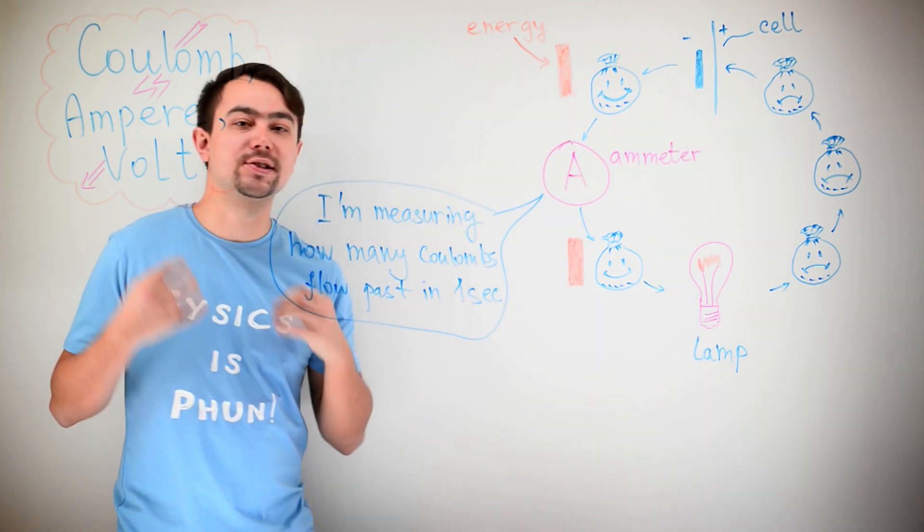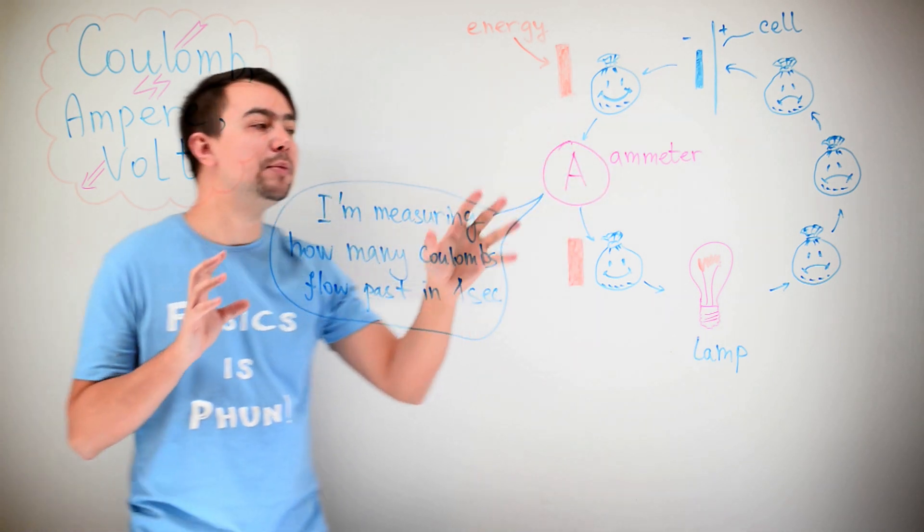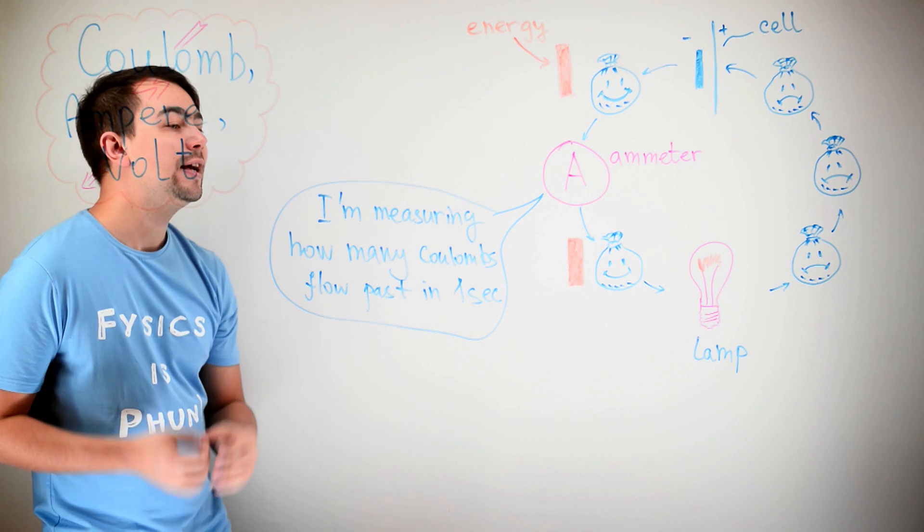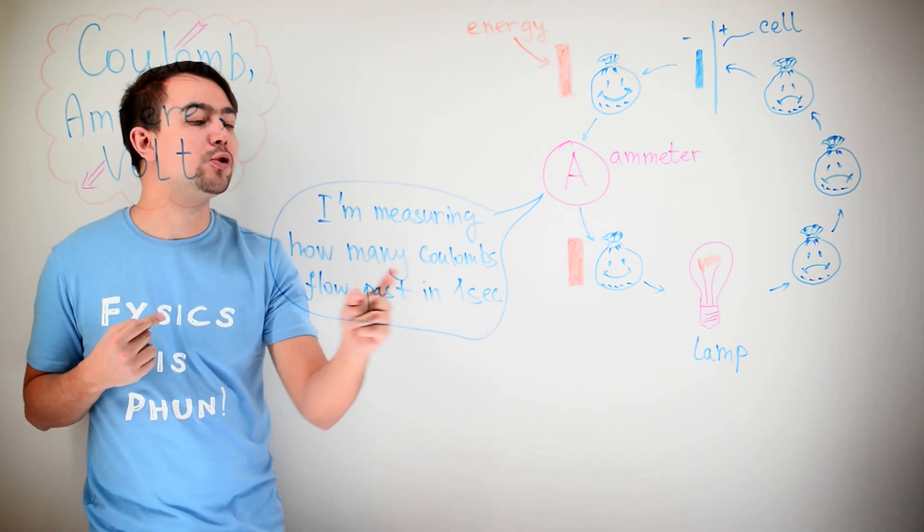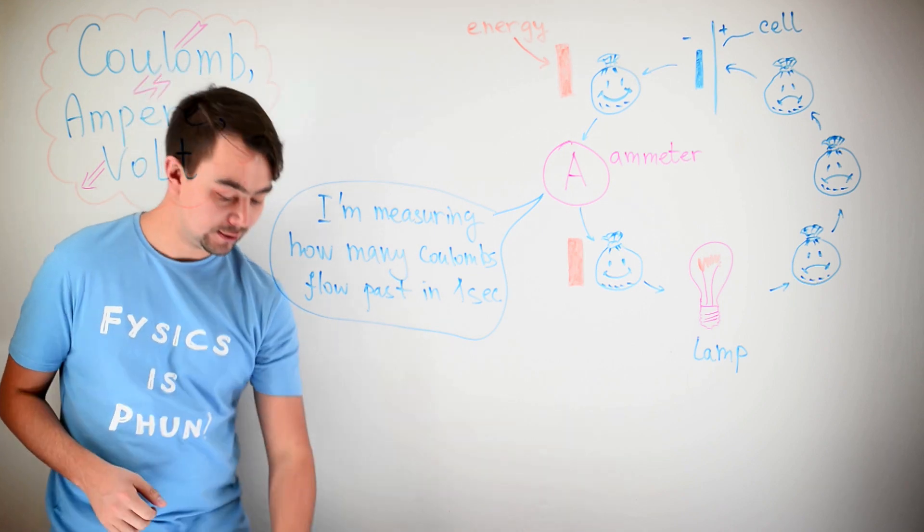A device that measures current is called an Ammeter. If we put an Ammeter into this circuit, it will measure how many Coulombs, or how many bags, flow past in one second.